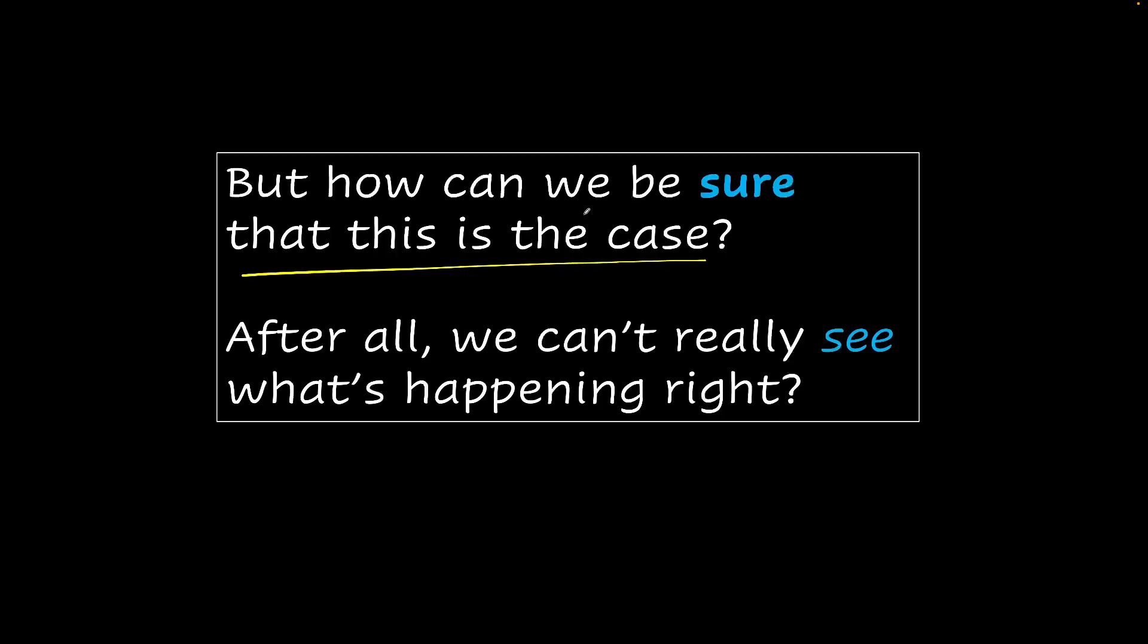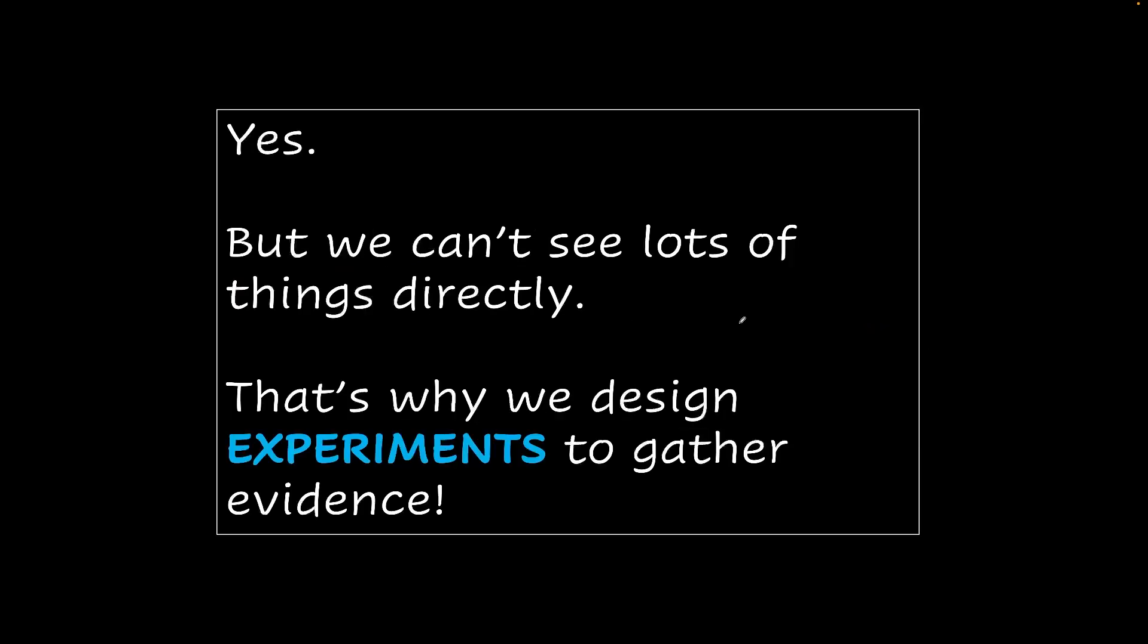Now let's move ahead. But how can we be sure that this is the case? Because we can't really see what's happening, even with a very powerful microscope. Yes, but we can't see a lot of things directly. You can't see gravity, can you? That's why we design experiments to gather evidence. And that's how science works. We can't see things with our eyes, but we can observe them indirectly through experimentation and thought. And that's sometimes better.